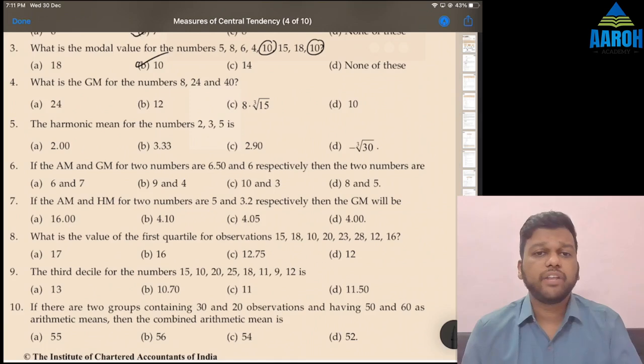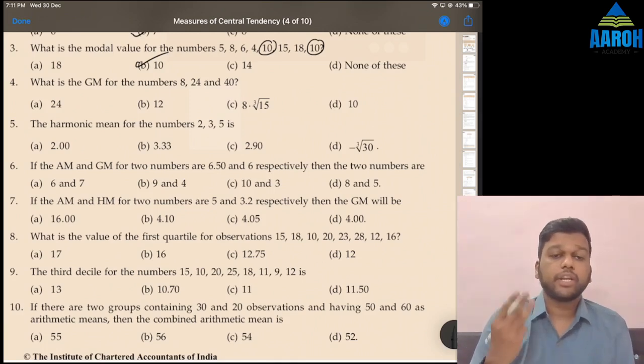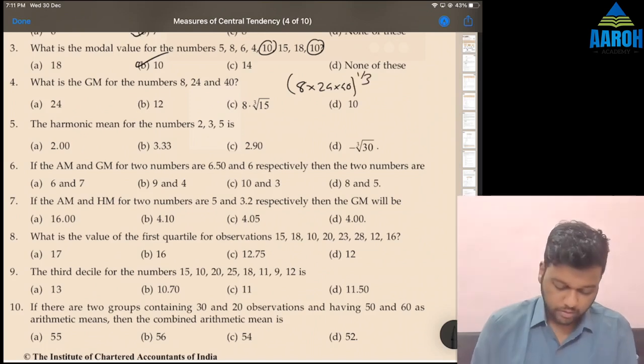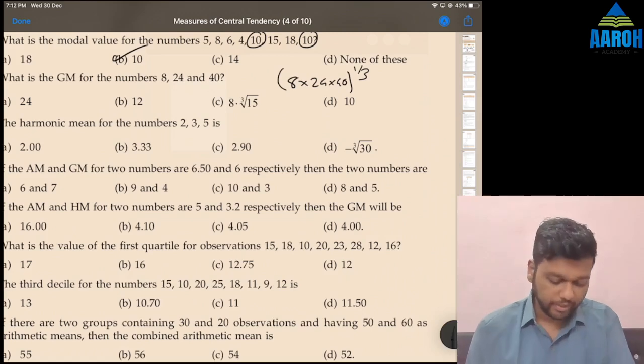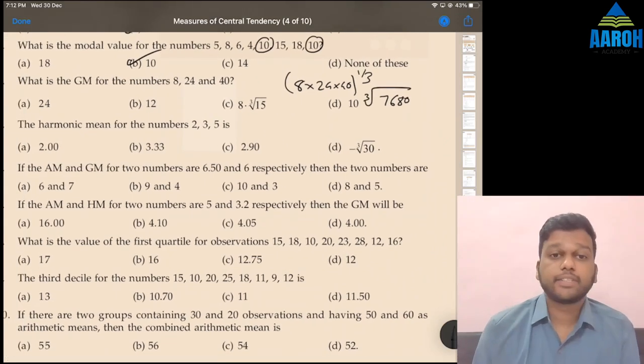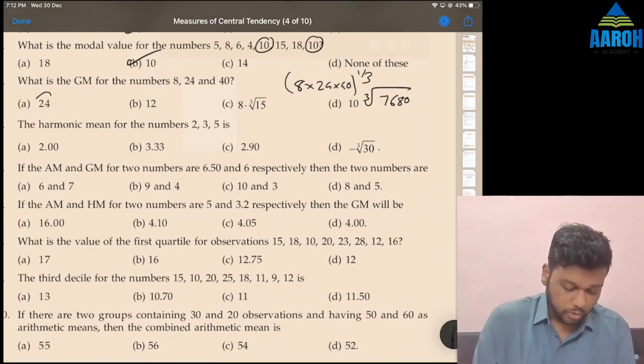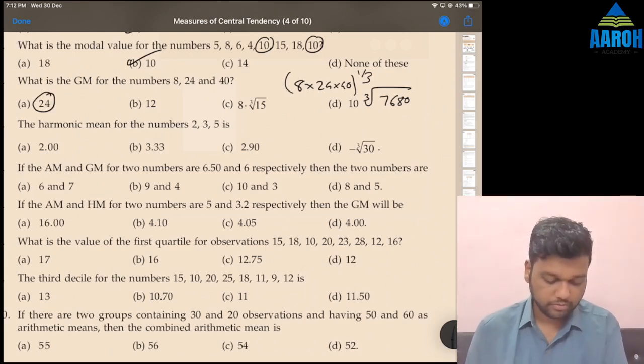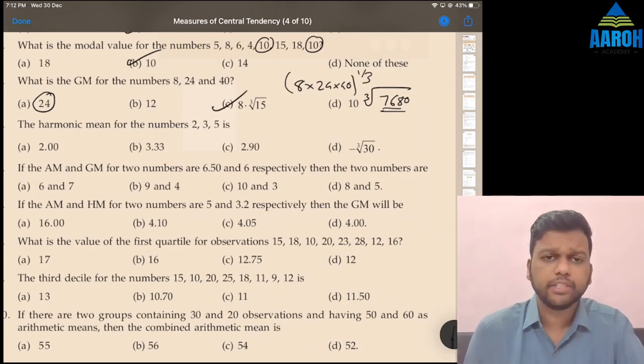What is GM for the numbers 8, 24 and 40? There are 3 numbers, so we multiply 8, 24 and 40 and raise it by 1 by 3, cube root. What is 8 into 24 and 40? 7680. Cube root of 7680. Now, these options are such that we don't even need to calculate exact value. 24 cube is 13,000, 12 cube is 1728. 10 cube is also not 7680. That means C is the correct answer.